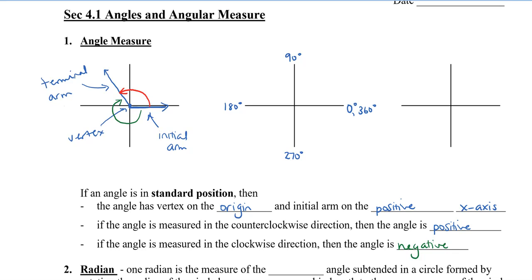Now, we can also rotate the other way. So, starting here at the initial arm, this would be 0. At the bottom, that would be negative 90. Then we have negative 180. Back to the top, we have negative 270. And then, all the way back to the beginning, we would then have negative 360 degrees.